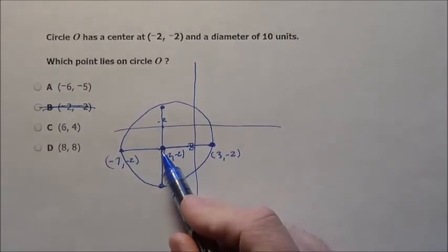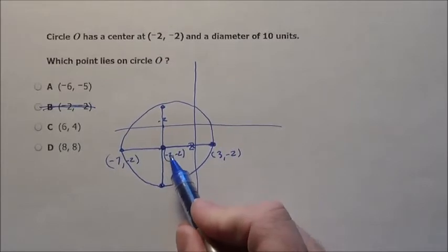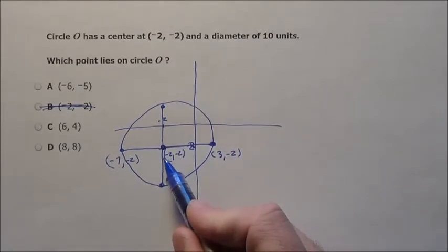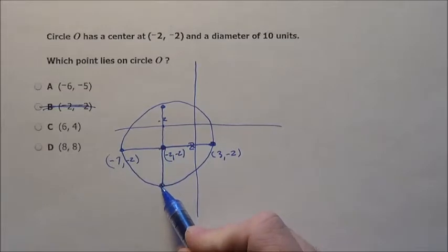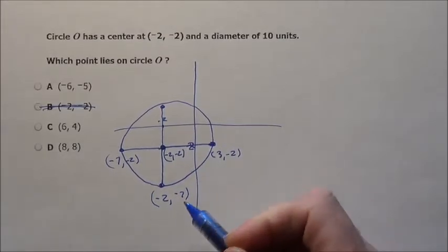But let's look at, maybe let's drop 5 units. If you are at negative 2, negative 2, and you then drop 5 units, you are going to be at negative 2, negative 7. Now, that's not it either.